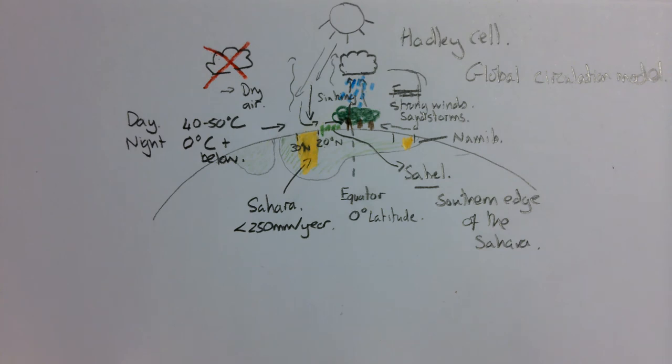What happens to the sinking air once it reaches the ground? Excellent. It travels overground towards the equator, getting warmed up as it goes.